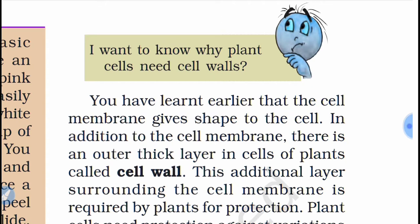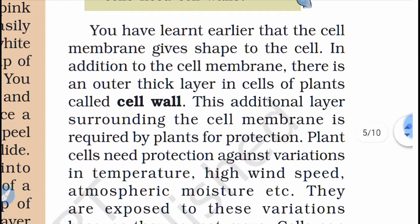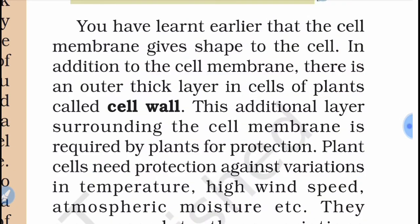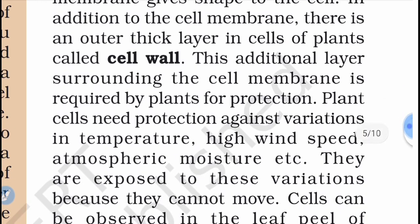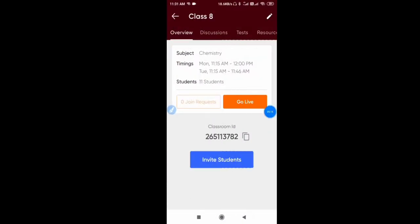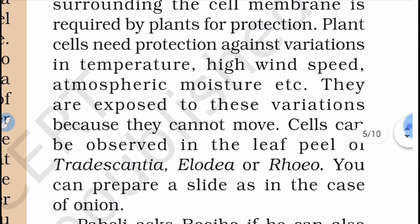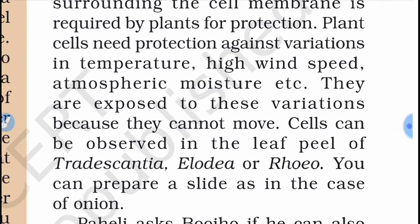Plants face these environmental conditions more compared to animals, so they need more protection. In addition to the cell membrane, there is an outer thick layer in plant cells called the cell wall. This additional layer is required for protection against variations in temperature, high wind speed, atmospheric moisture, etc. Plants are exposed to these variations because they cannot move.